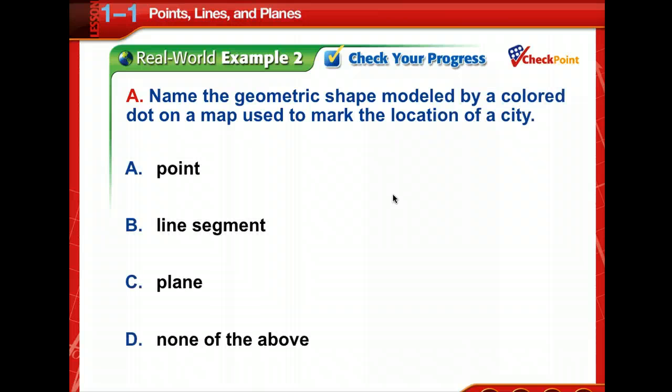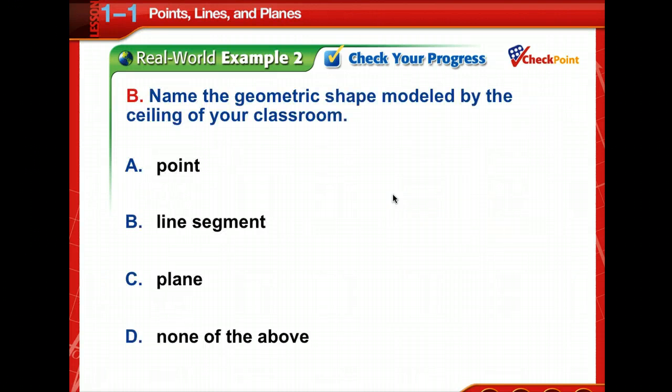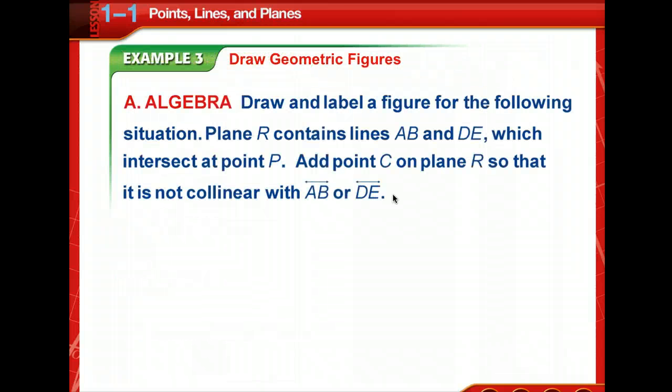Time to check your progress. Name the geometric shape modeled by a colored dot on a map used to mark the location of a city. That was tough, wasn't it? A point. Good job. Next, name the geometric shape modeled by the ceiling of your classroom. Yep, that's a plane for sure. It's a flat surface, isn't it?